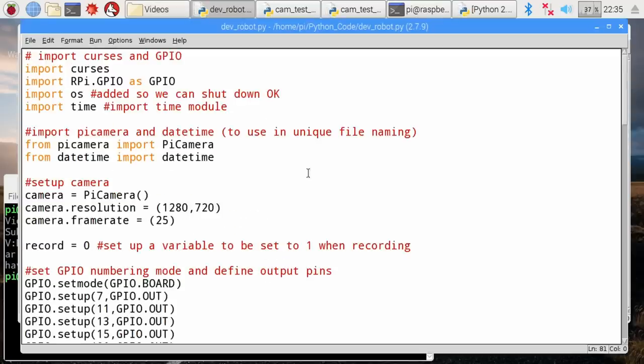So, I'll just run this just to prove the principle again. And if we look back again into the folder, we've now got a file called 22-34-55-JPG. So, we can take all that principle, put it into our robot control code. This code you've seen before if you've seen this series. And you can get this from the robot's web page. And, basically, all I've done here is to add the stuff to import Pi camera and date time. Set up the camera. And, also, I'm setting up a variable called record, which will keep track of whether recording or not.